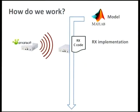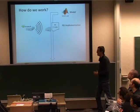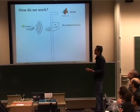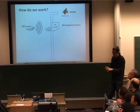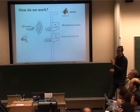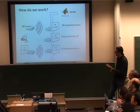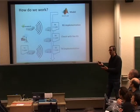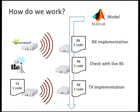How do we work? Typically, we start with a MATLAB model. We use a reference base station — which happens to be Amarisoft, because it's much cheaper than a professional signal generator. Then we implement our receiver code for specific functionality. Then we move to a live base station, capturing a live signal, and check that our receiver code is working properly. Finally, we make the transmitter and check it against the receiver — we know it's working with the standard and verify that the signal generated by the transmitter matches the others.